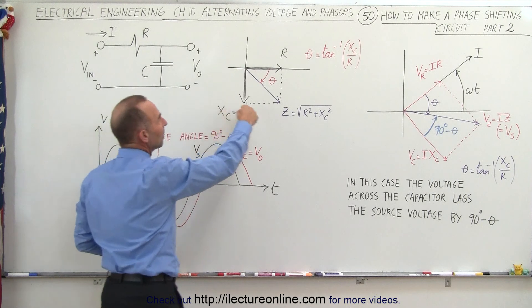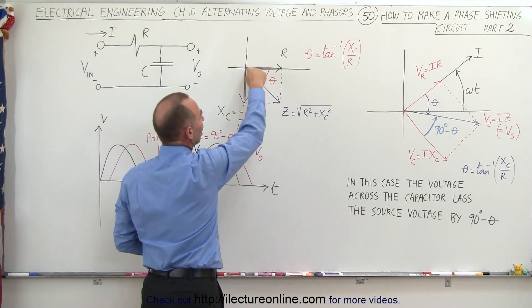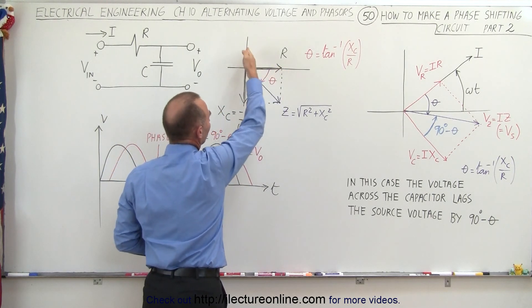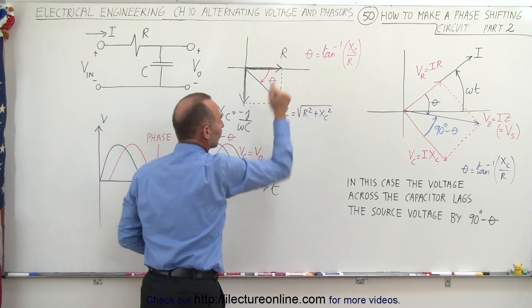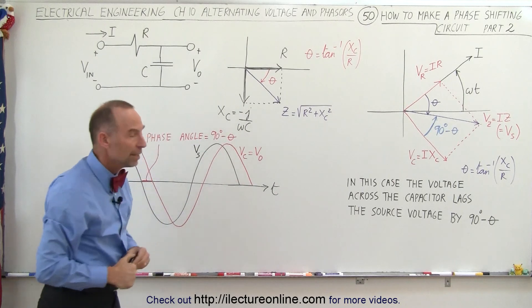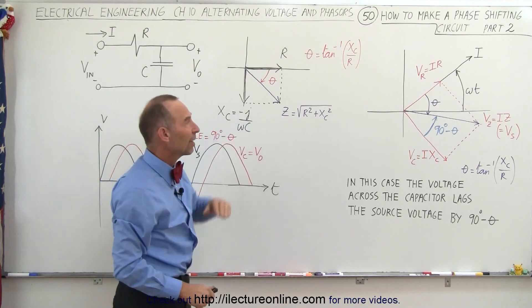So what that means is, if we use the same phasor diagram here, we can see that this is the direction of the resistance. This is the direction of the capacitive reactants. We still have the phase angle theta, which is found exactly the same way, and the impedance is found the exact same way.